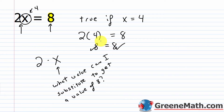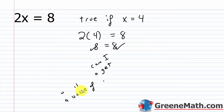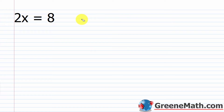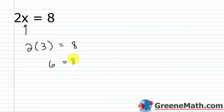If I had replaced x with anything else, I would have gotten a false statement, because there's no other number that when you multiply by 2 gives you 8. For example, if x equals 3, then 2 times 3 is not equal to 8 — I'd get 6 equals 8, and 6 and 8 are not equal. So you're looking for the value for that variable that makes the equation true, meaning the left and right side will be the same — in this case x equals 4.